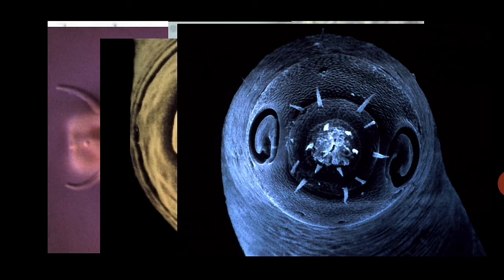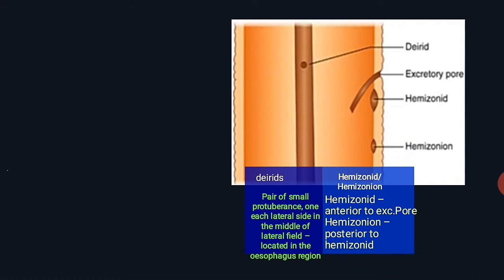Let's talk about deirids and hemizonid. Deirids are also known as cervical papillae or pad papillae, situated in the mid-region of the esophagus, exactly opposite to the excretory pore, as clearly shown in the diagram. They function as mechanoreceptors. The hemizonid is a highly refractive, convex structure forming a semicircular shape.